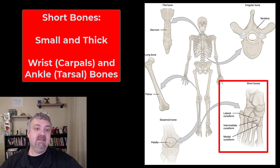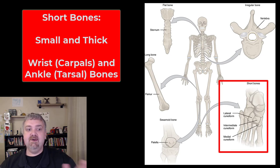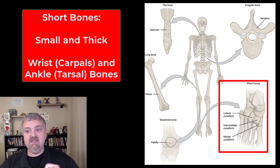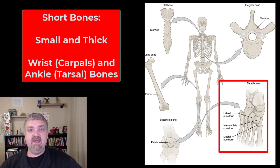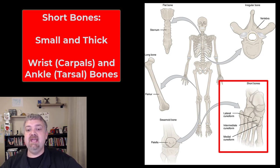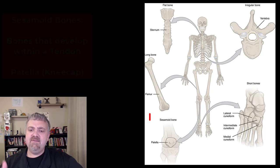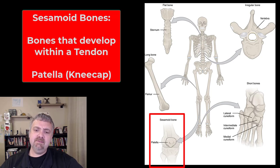Short bones, like the name implies, they're going to be short — small and thick little bones. The key examples here are going to be those eight carpal bones in your wrist and the seven tarsal bones in your ankles.